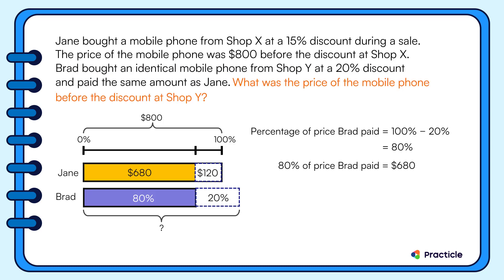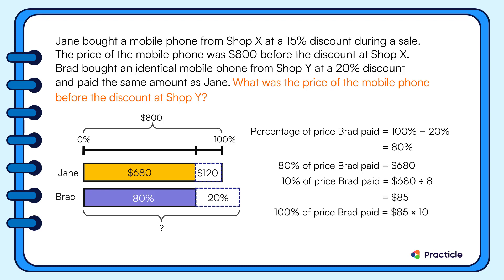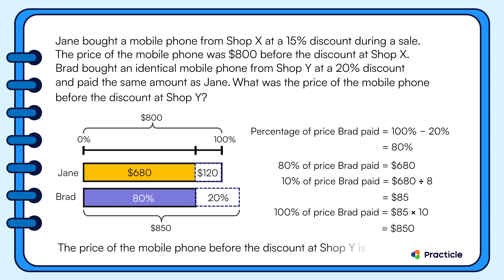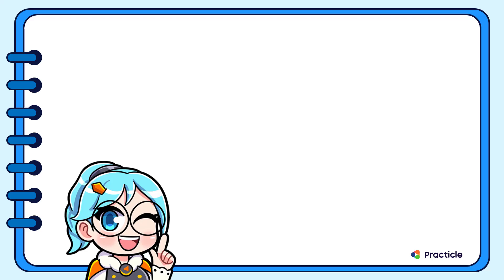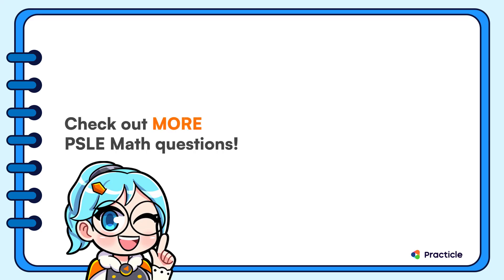All we need to do is divide $680 by 8 to find how much 10% of the original price is. Then we can multiply this by 10 to find 100% of the original price. Looks like the price of the mobile phone before the discount at ShopY is $850. Are you confident about solving percentage word problems like this now?